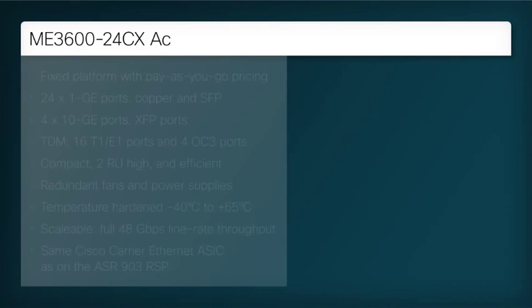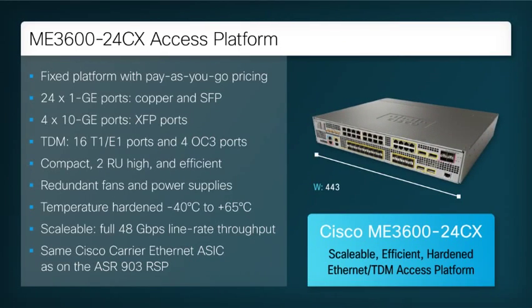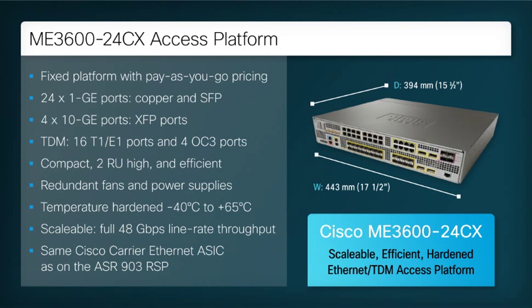Next, we will deploy an ME3600-24CX as an access platform, using it as the demarcation device for the IP MPLS network and the central interconnection point for customer traffic. Unlike the ASR903, the ME3600-24CX is a fixed platform, but it still supports a wide range of built-in connectivity, including Ethernet options and TDM interfaces.